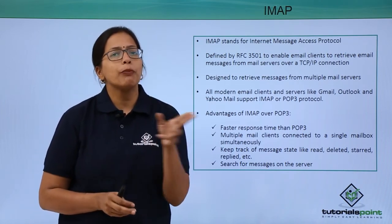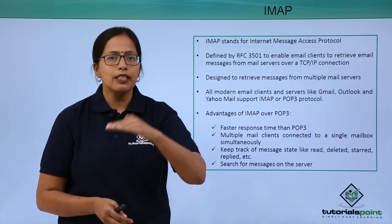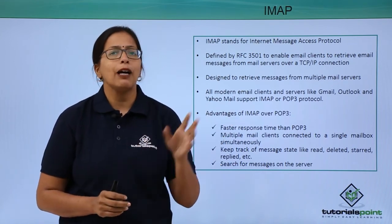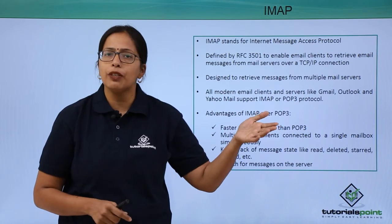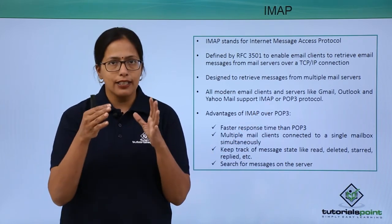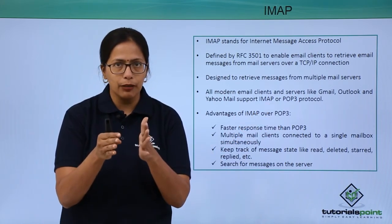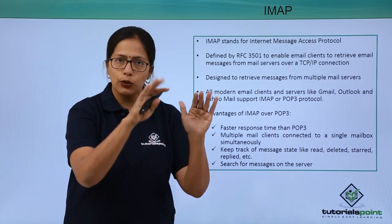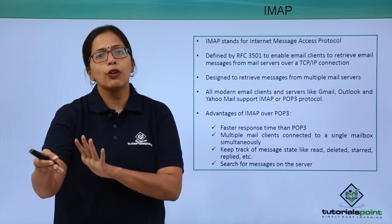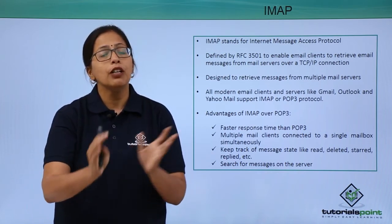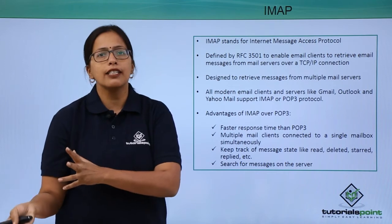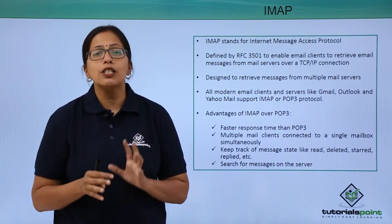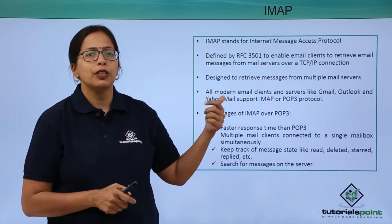That is another key difference between POP3 and IMAP. POP3 gets the mails onto your system and deletes them from the server. IMAP, on the other hand, keeps one copy of the mail on the server. So whether you access your mailbox from your desktop at the office, your laptop, or your mobile, you can still see all the mails in your inbox. This was not possible with POP3.